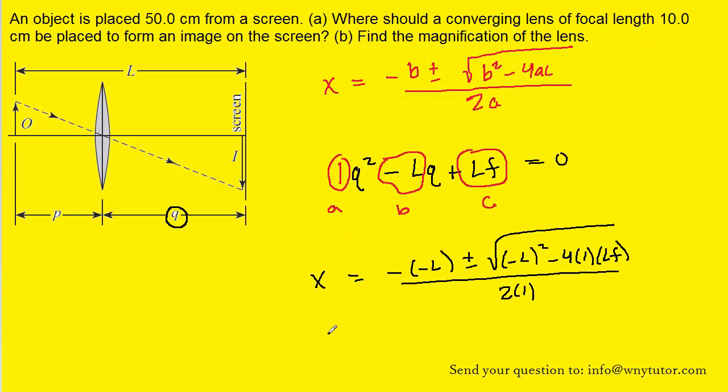So we've gone ahead and plugged in. And if we simplify we can see we have a negative negative L which is positive L. Plus or minus. And then we have our square root. If we square negative L we end up with L squared. And then we have minus 4LF. And this is all over 2.